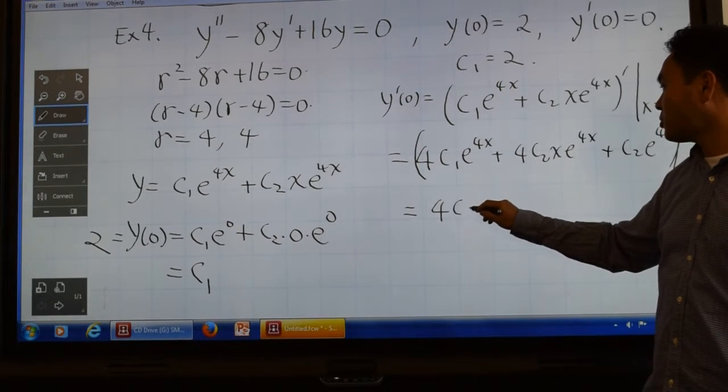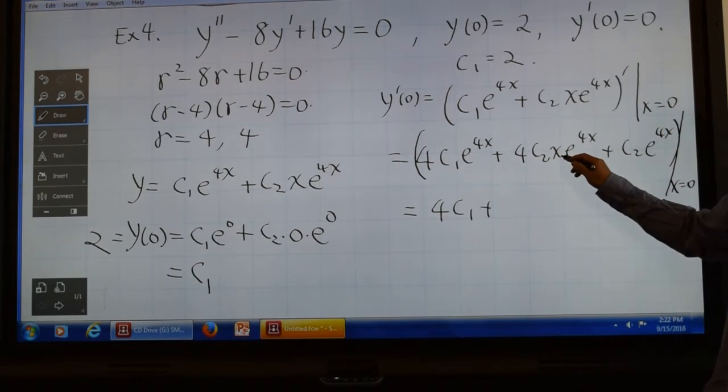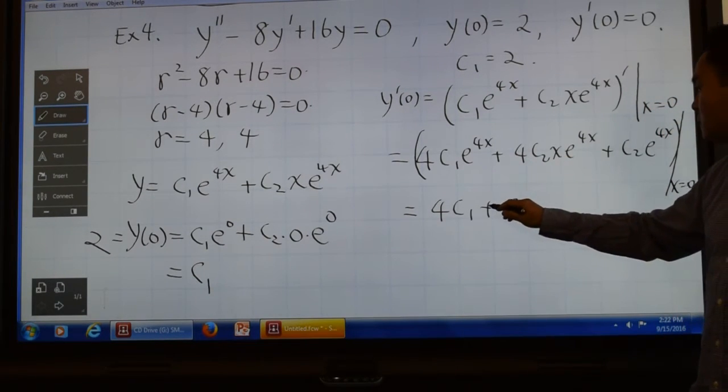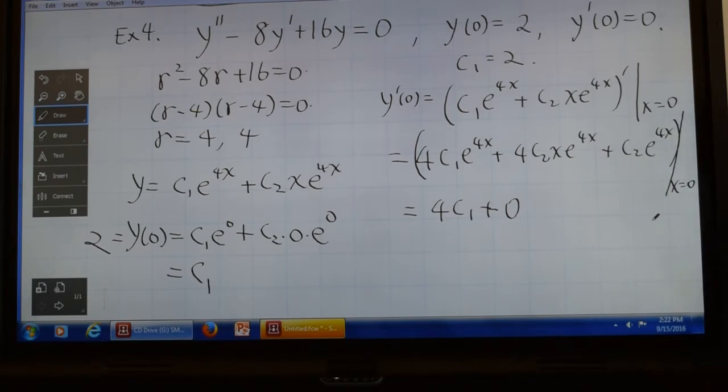Plugging in x equal to 0 gives you 4c1. Plugging 0 here doesn't give you anything because 0 is multiplied and disappears, and when you plug in 0 here, you get c2.